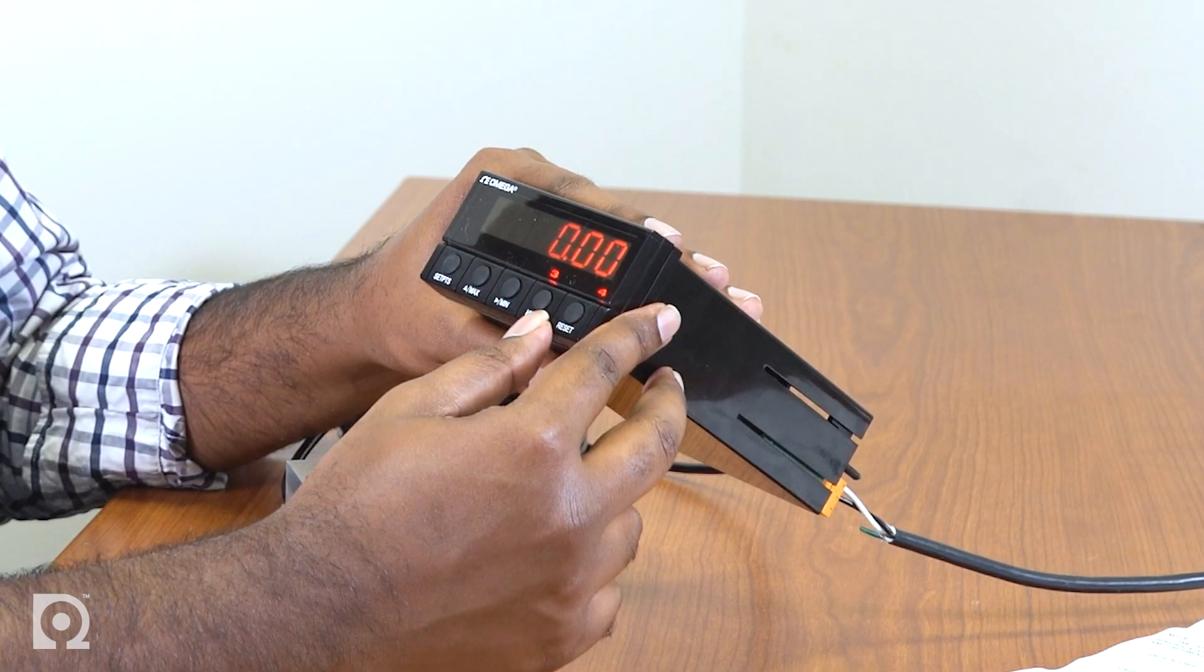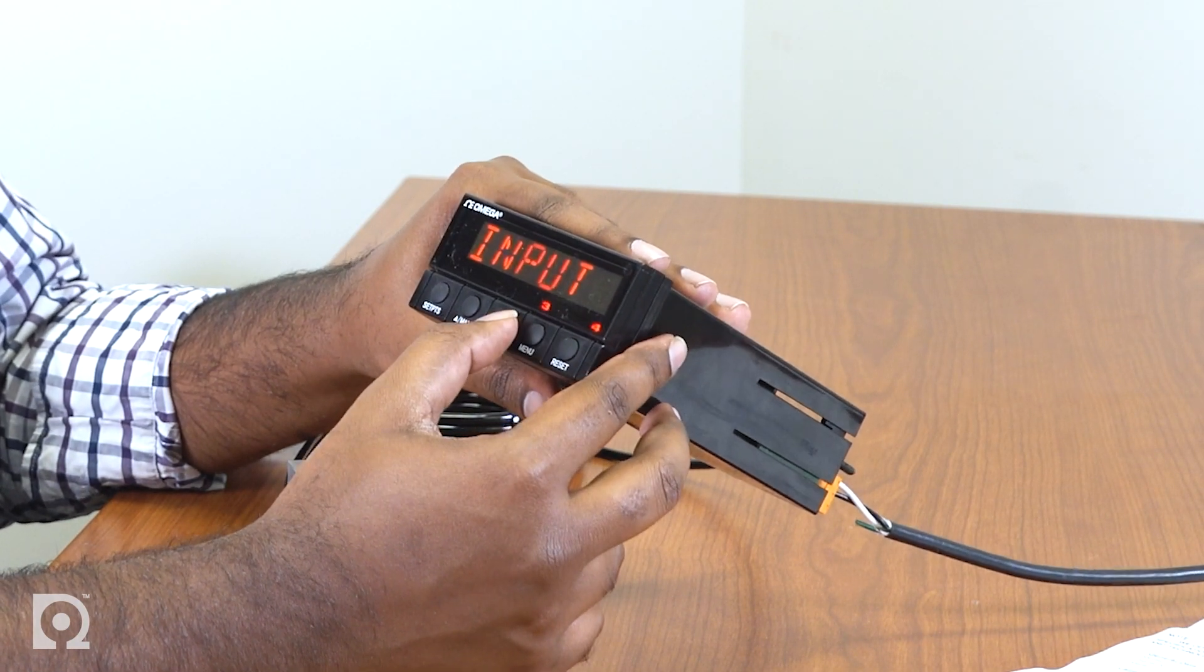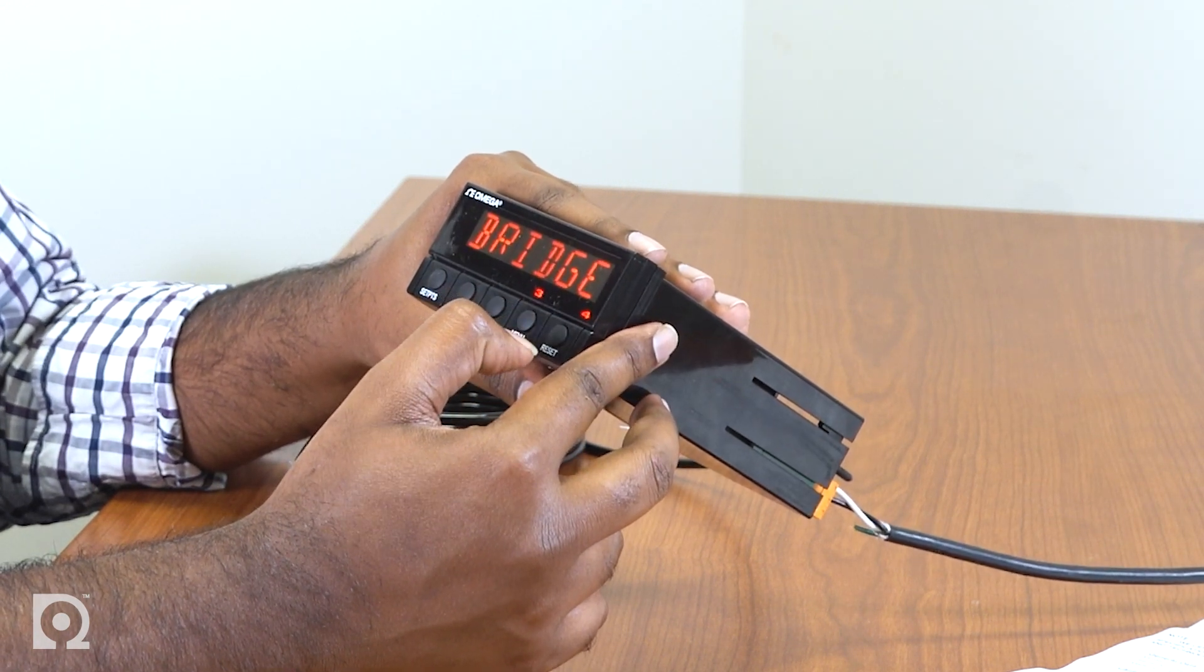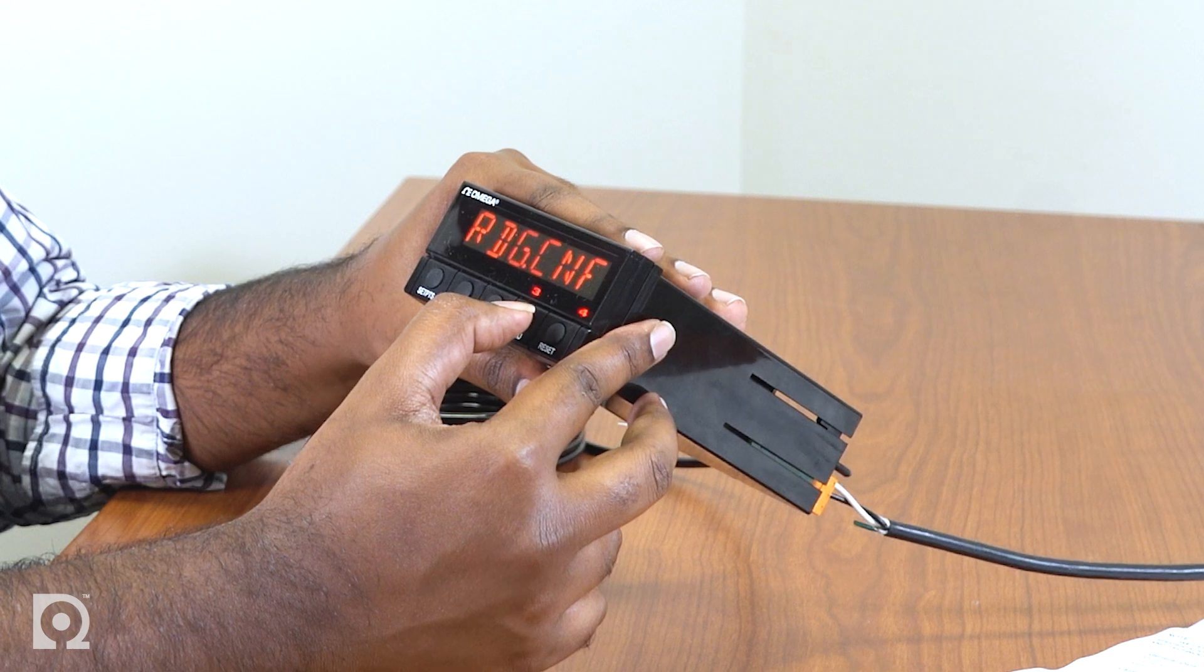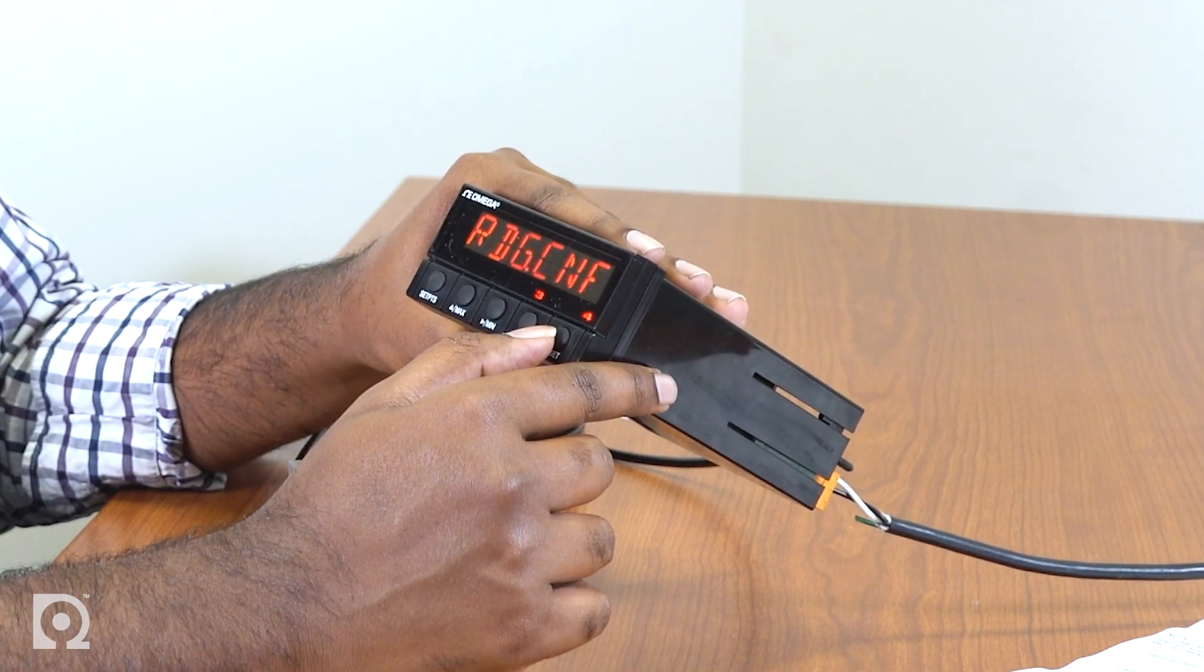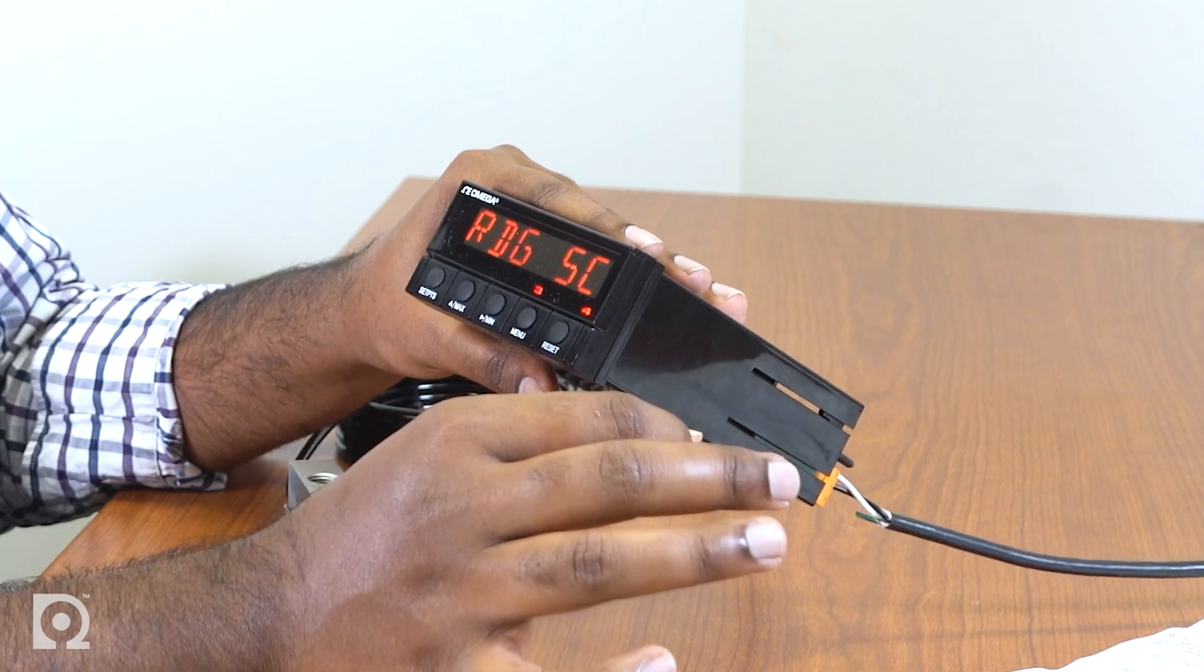So we have wired the load cell to the meter. Let's dive in and start pushing some buttons. To begin with, press the menu button until you see input. Now press the min button once, you'll see bridge flashing. Press the menu button once to save it. Press the menu button again, you'll see RDG.CNF. You don't need to make any changes in RDG-CNF. Press the menu button again, you'll see RDG-SC, which stands for reading scale.